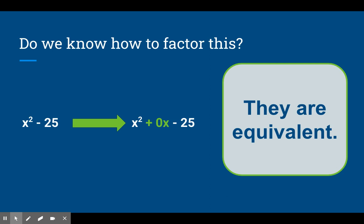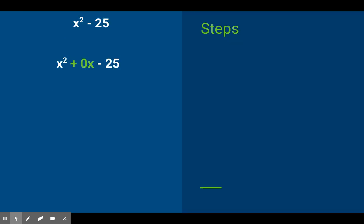So every time in math when you don't know how to do something, change it into a form you do know how to work with. So for example, if we took this x squared minus 25 and put 0x in the middle, if we did our steps for factor by grouping, there's no greatest common factor. 1, 0, and negative 25 have nothing in common.